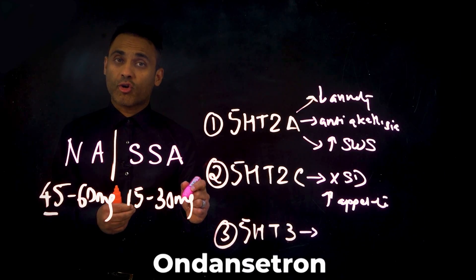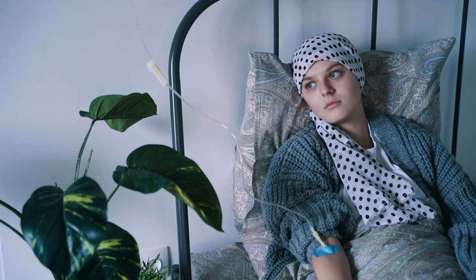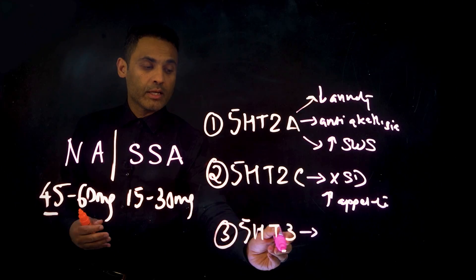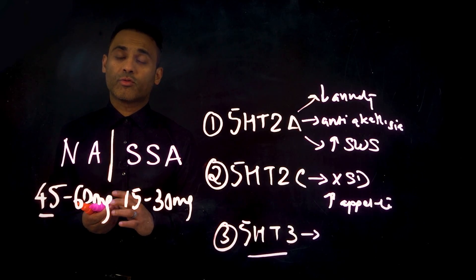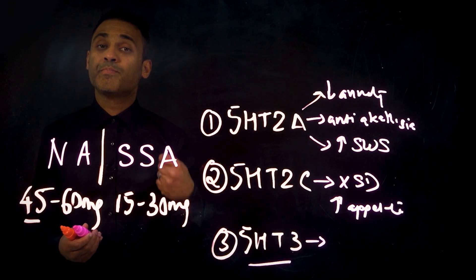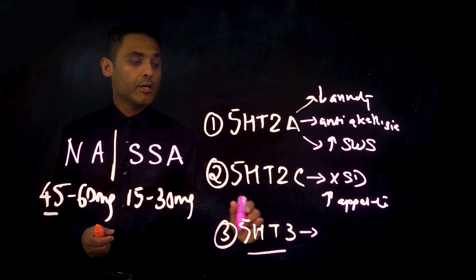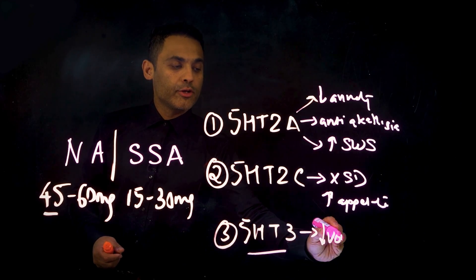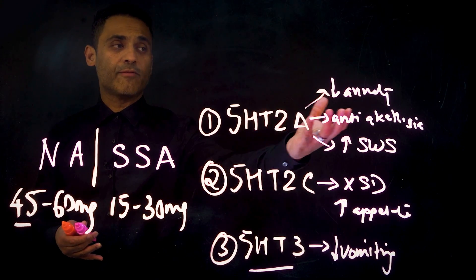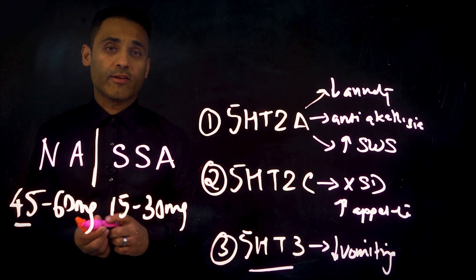Note that ondansetron, which is used in cancer chemotherapy, is a very effective anti-nausea, anti-vomiting agent, is a specific 5-HT3 antagonist. Mirtazapine's got 5-HT3 antagonism as one of its properties. So you can see that mirtazapine at these lower doses can provide quite a few benefits, specifically with regards to the anti-anxiety effect.